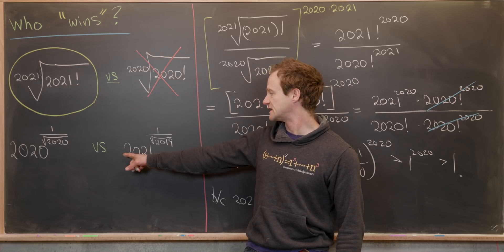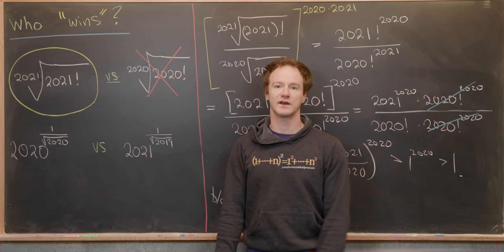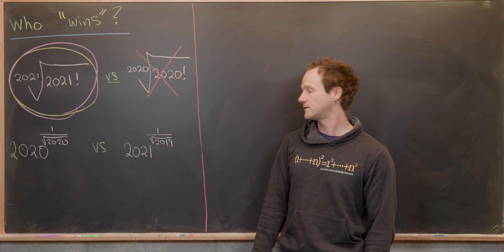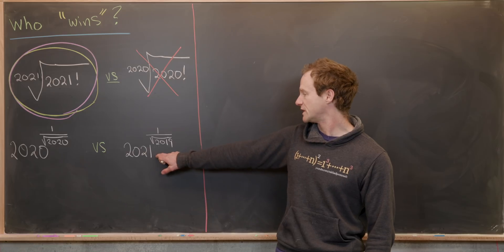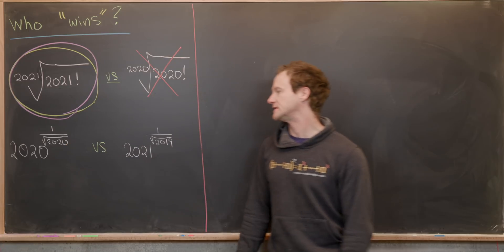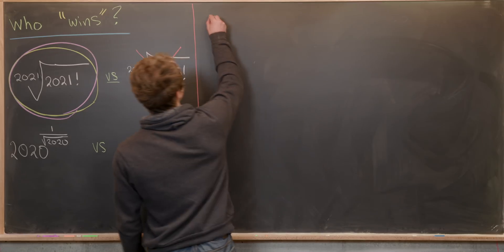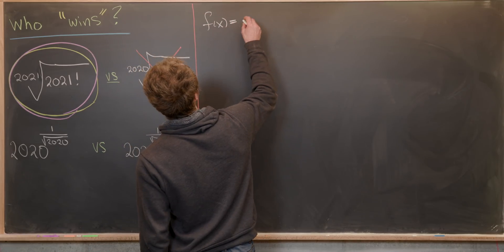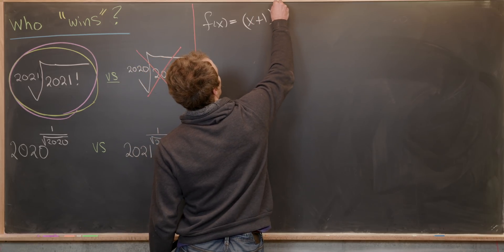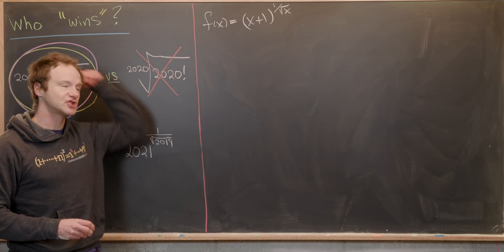Now let's see if 2021 and 2019 can work together to beat 2020. We just showed that 2021 beats 2020 by itself; now we want to show that 2021 and 2019 can team up to beat two copies of 2020. We'll do this with calculus, considering the function f of x equals x plus one to the power of one over the square root of x, and we want to show that this function is decreasing.